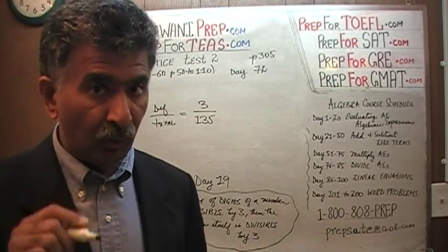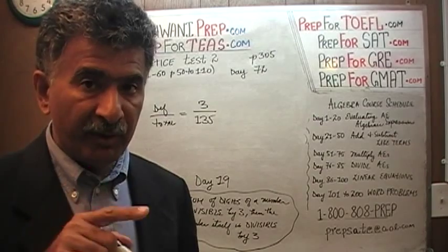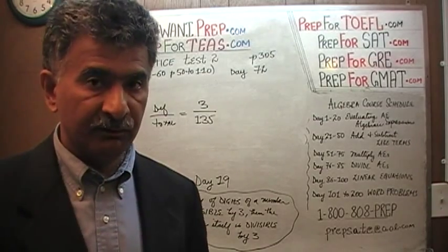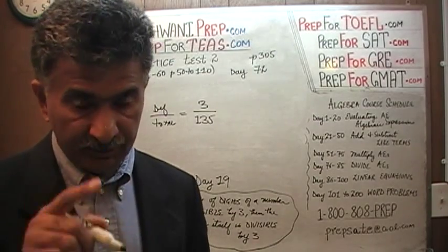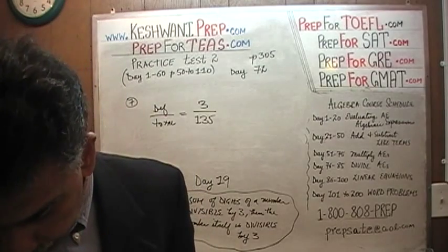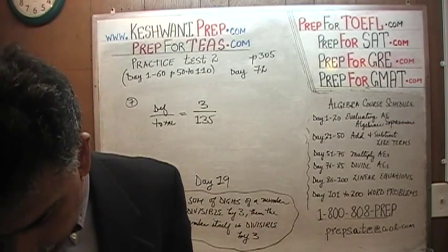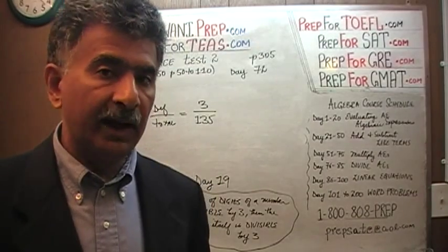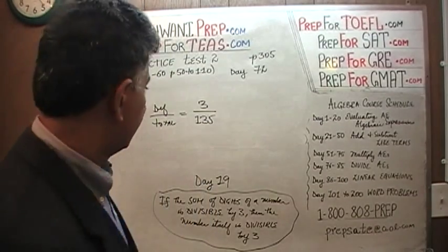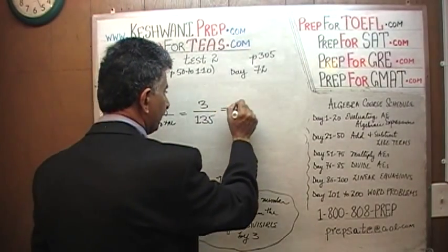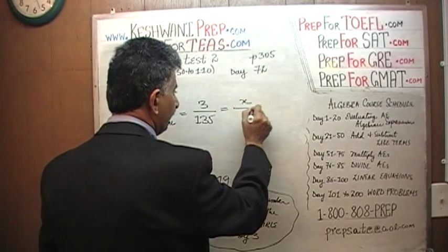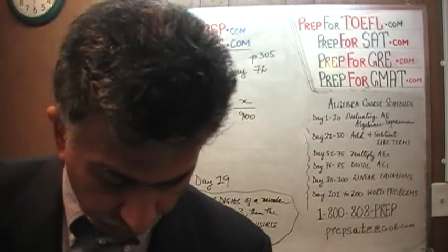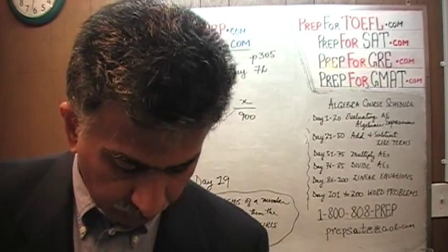Assuming that this ratio holds — assuming that the manufacturing method does not change and everything else stays the same — the question is: how many defective units do we expect to find if we were to ship out 900 units? That's all it is. So you're going to cross-multiply and solve for x.